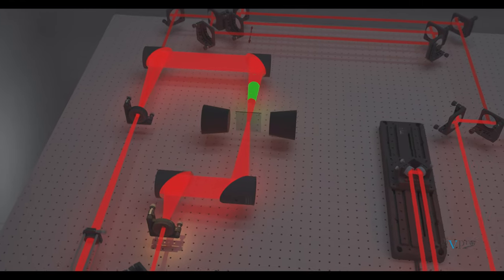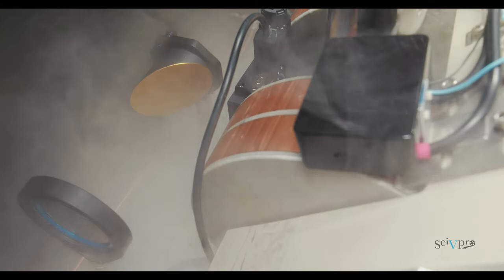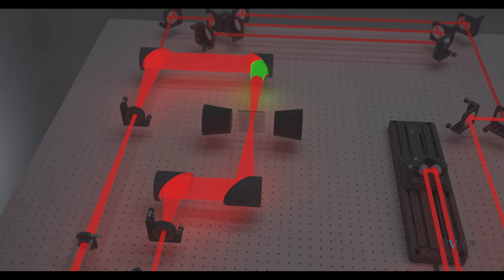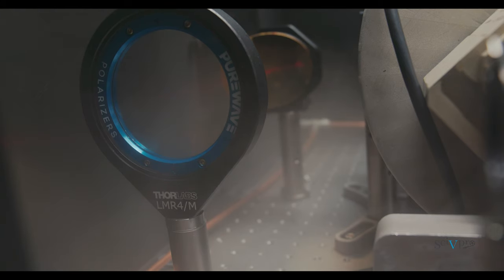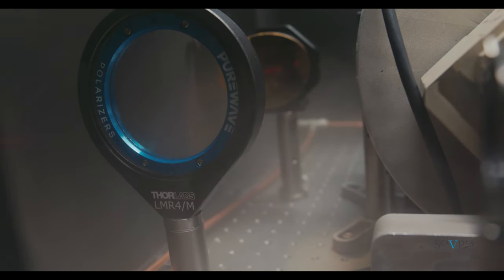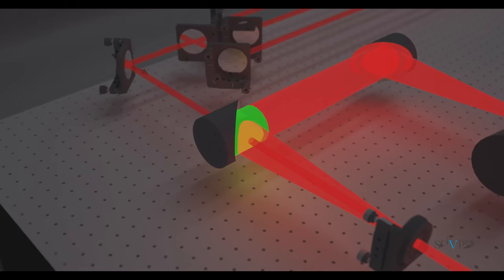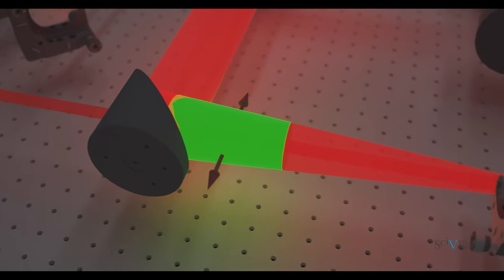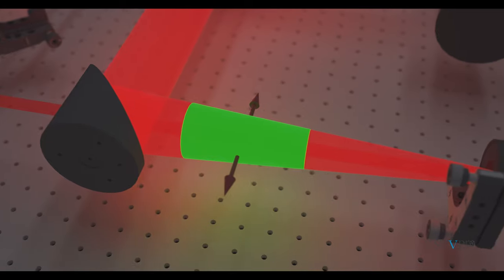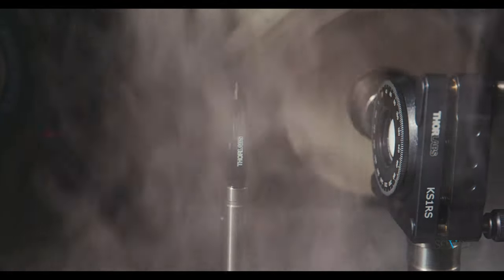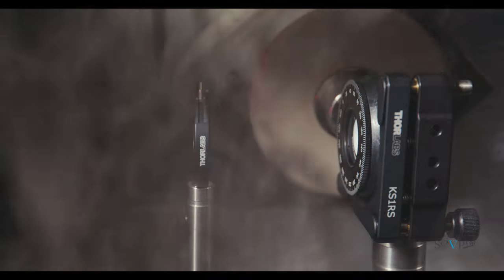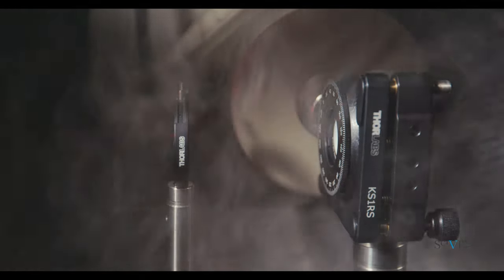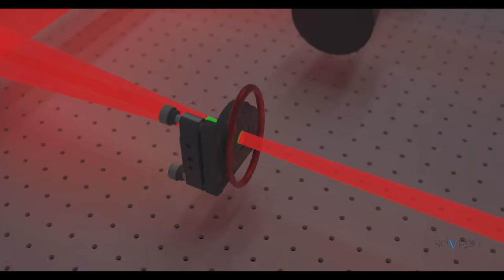The terahertz beam coming from the sample passes through a wire grid polarizer mounted on a motorized stage, goes through a parabolic mirror and through another wire grid polarizer before reaching a second parabolic mirror. The terahertz and probe beams meet at this parabolic mirror and travel together through the black box.